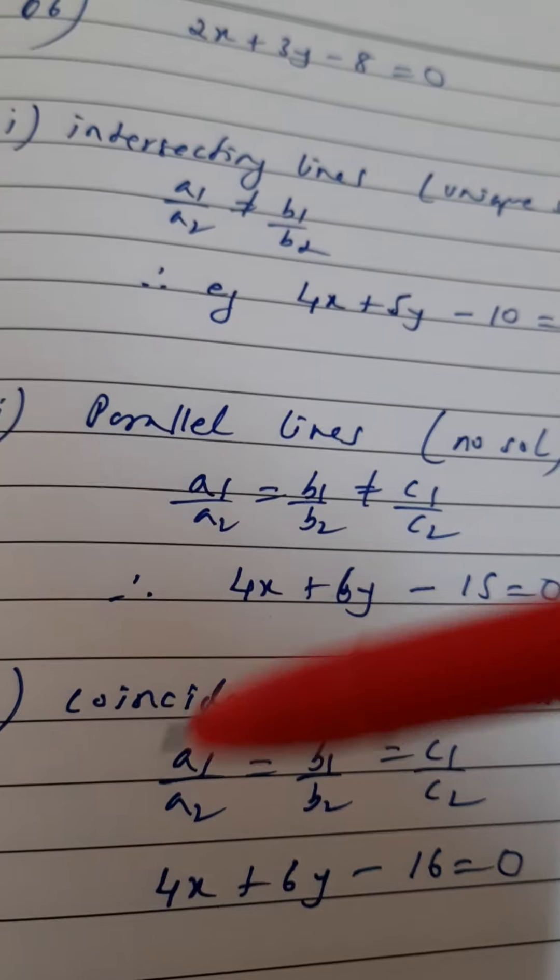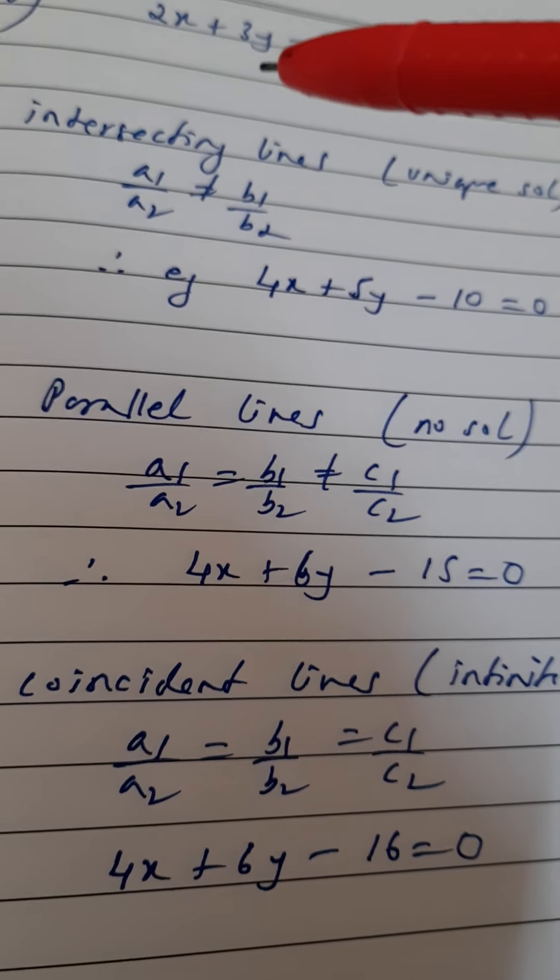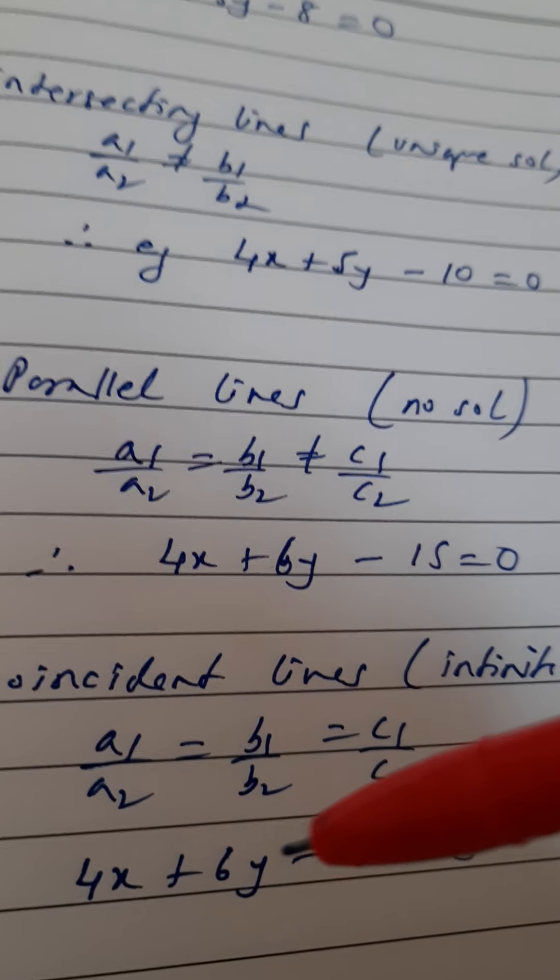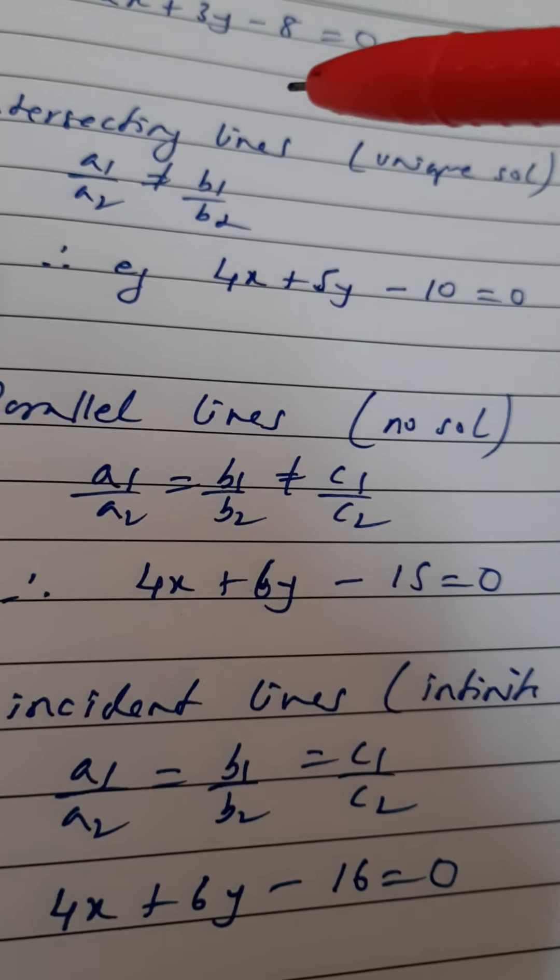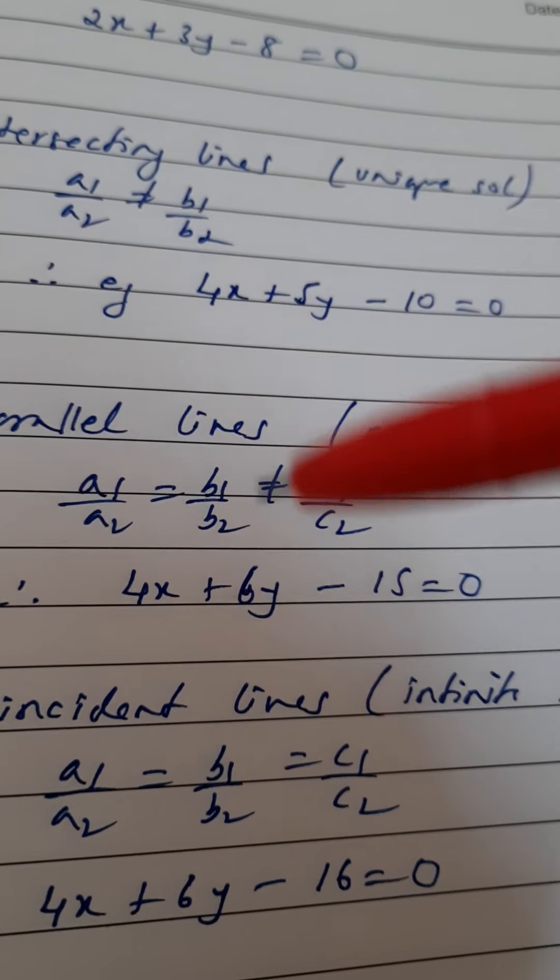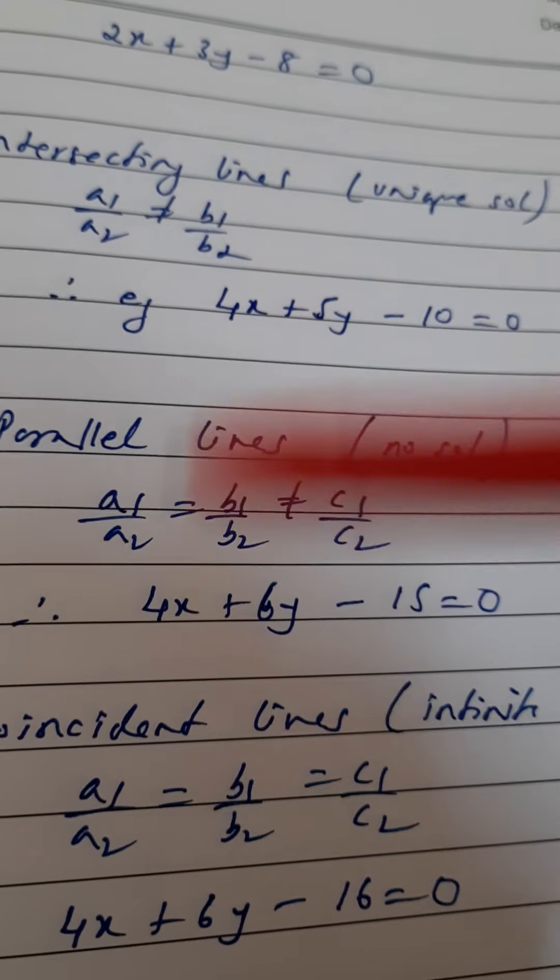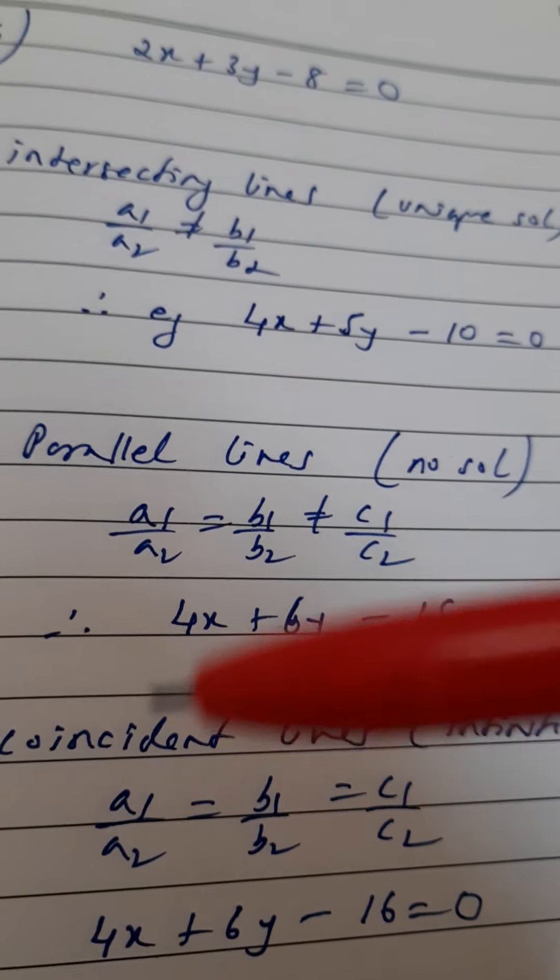Then I am looking at b1/b2, so that is 3 by 6—that is also 1 by 2. And I have put -8 and -16, so that is also 1 by 2. So all of them are equal. You can write any equation like this. I have just given you an example, but this is not a fixed answer.